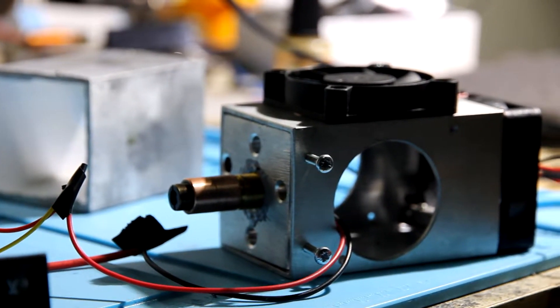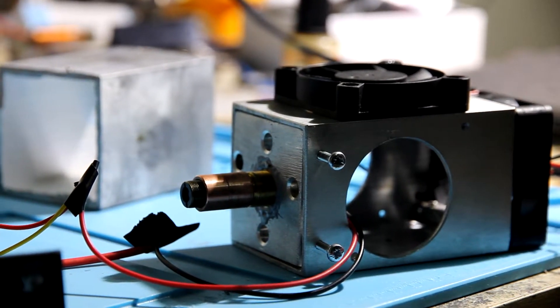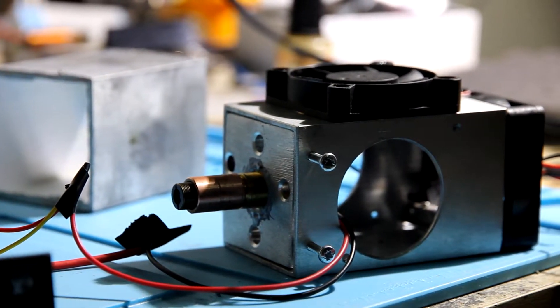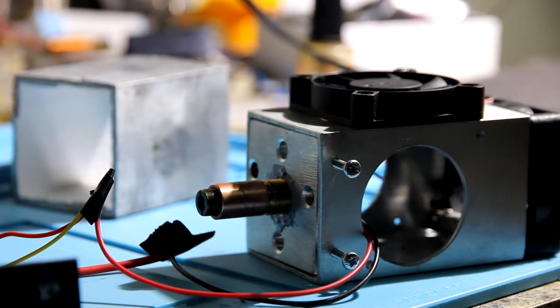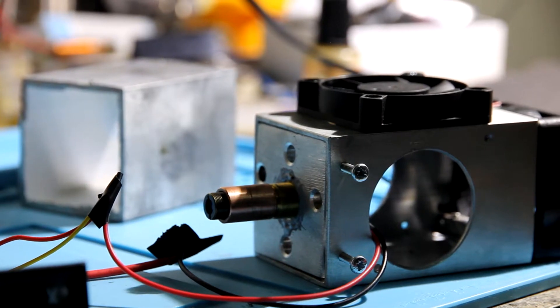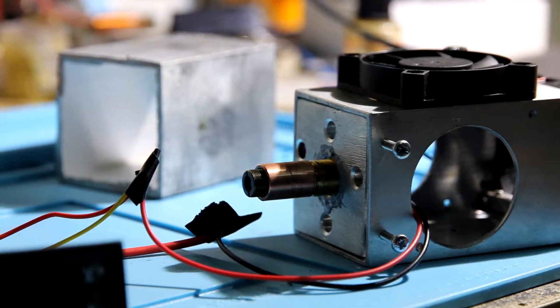As you see we already installed the diode C mount inside the brass housing and then it goes with a copper mount and at the end we use long focal 3 element lens.